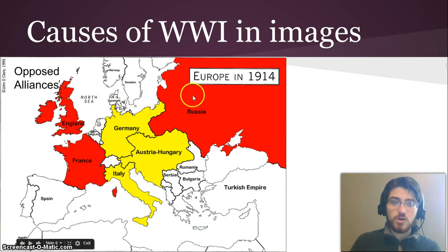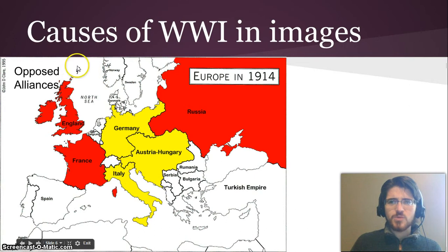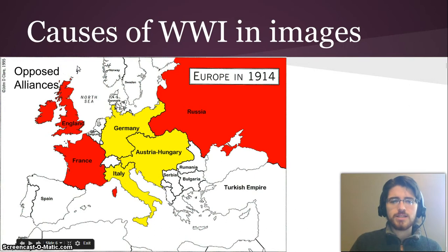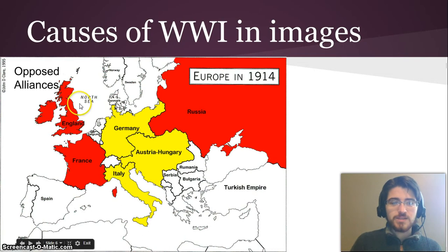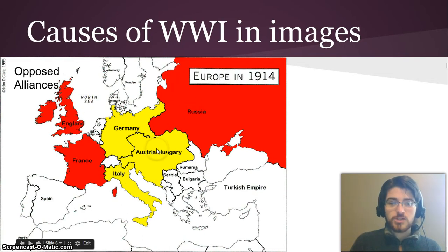Here's a huge cause: there were two major alliances in Europe. An alliance is when you agree to protect those you're allied with — if someone goes to war with them, they're now at war with you. England, France, and Russia were on one side, and Germany, Austria-Hungary, and Italy were on the other side.